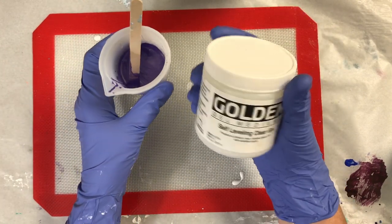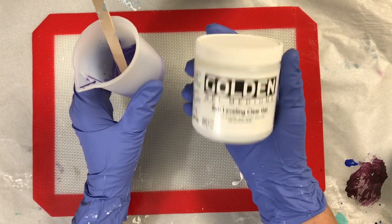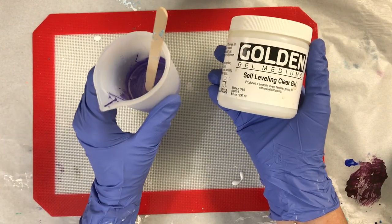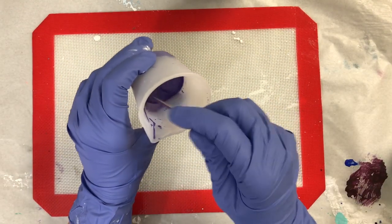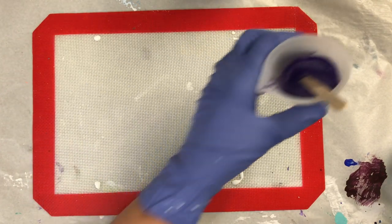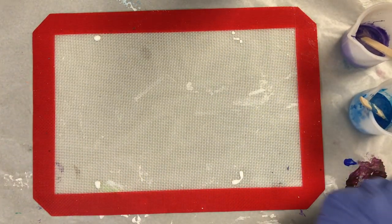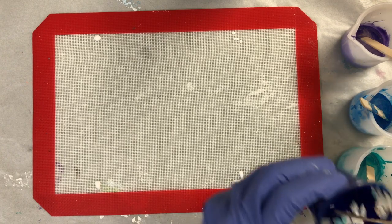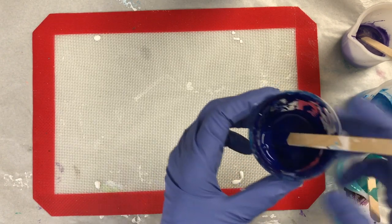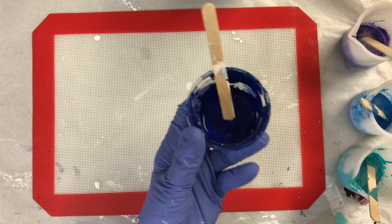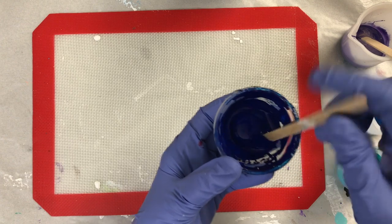What I used was one part of the gold self leveling gel to one part paint, and then water to get it whatever consistency I need. Those colors right here, and this Windsor blue, is also left over and it's mixed with one part Floetrol to four parts paint and a little bit of water.